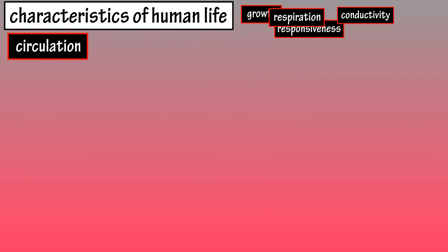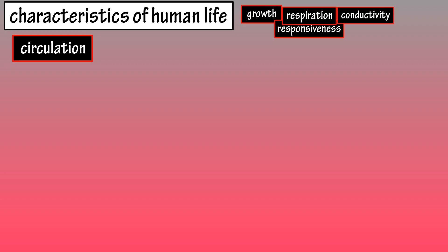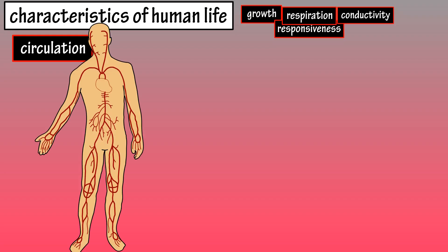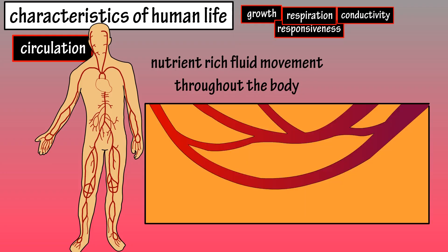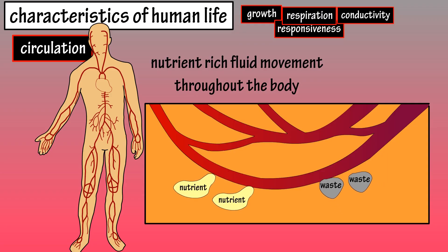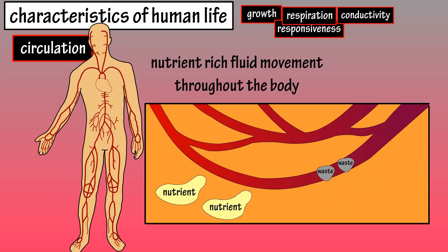Circulation is a characteristic of life. Circulation is the movement of substance-containing fluids from one area of the body to another area of the body. This is accomplished through blood vessels that circulate throughout the body, delivering nutrients and removing wastes.